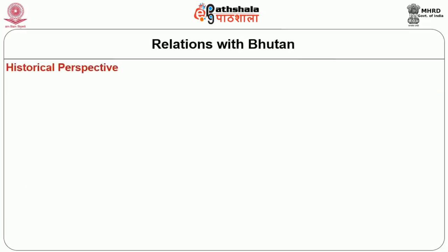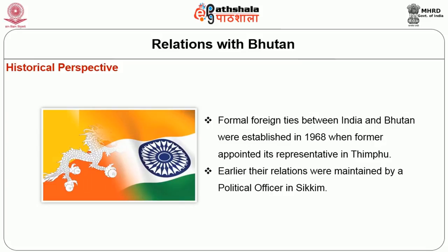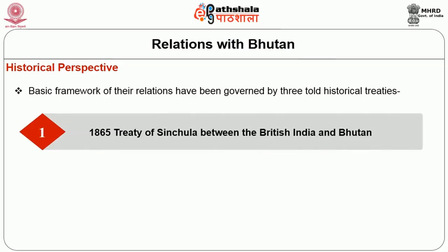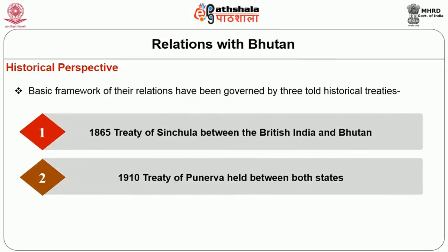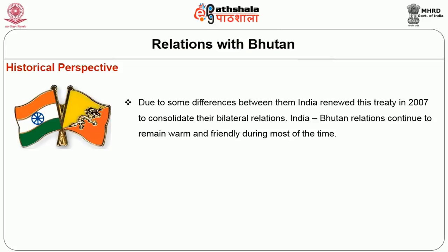Relations with Bhutan — Historical Perspective. Formal foreign ties between India and Bhutan were established in 1968 when India appointed its representatives in Thimpu. Earlier, their relations were maintained by a political officer in Sikkim. The basic framework of their relations has been governed by three historical treaties: the 1865 Treaty of Sinchula between British India and Bhutan, the 1910 Treaty of Punakha, and the 1949 Treaty of Friendship between independent India and Bhutan. Due to some differences, India renewed this treaty in 2007 to consolidate bilateral relations.